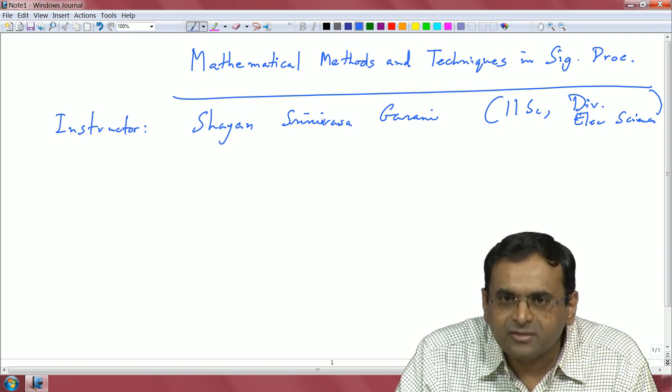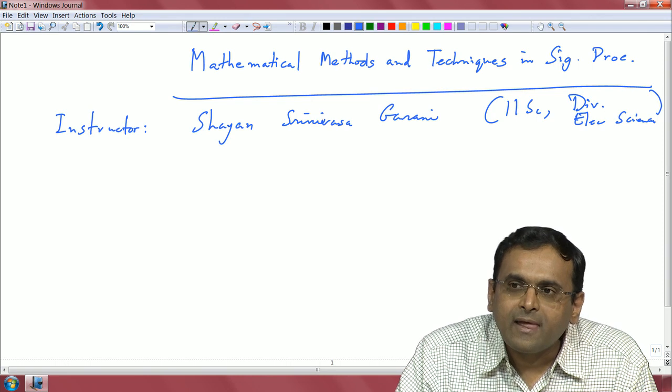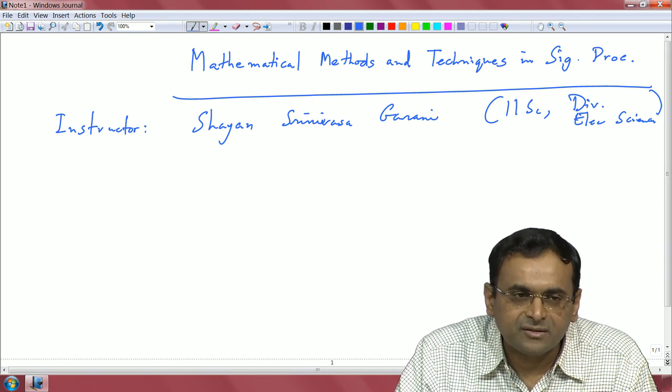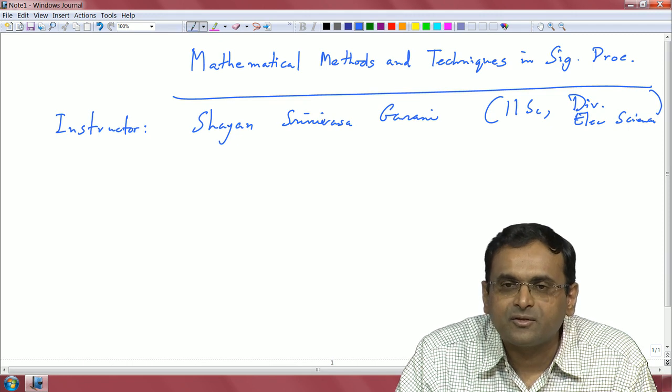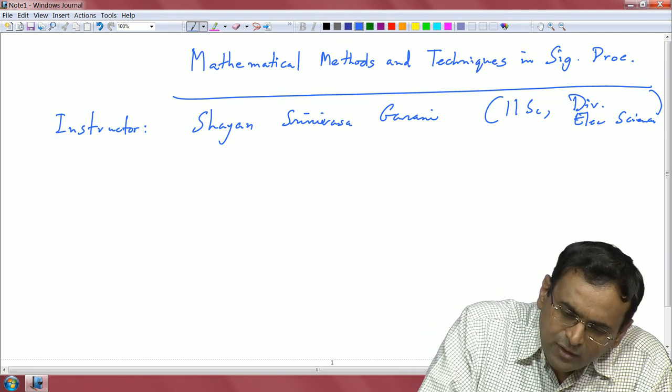This is a graduate level course and those of you who have a good undergraduate background in signals and systems or digital signal processing at the undergraduate level, you can credit this course.